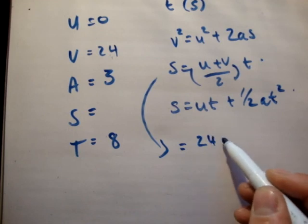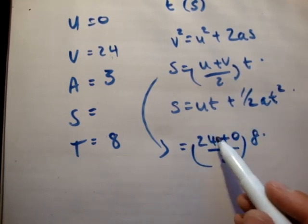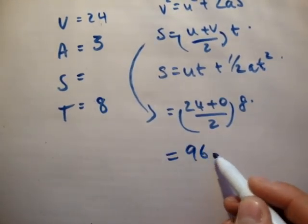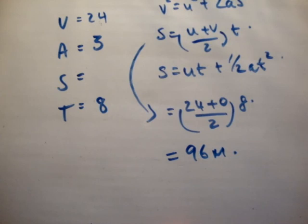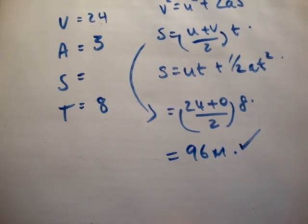I'm going to say s is equal to u, which is 24, plus 0, over 2, times 8. So that's 12 times 8 is equal to 96 meters. Let's check that at the back of the book. And we have 96 meters is correct. So I hope you see that that's not too difficult.